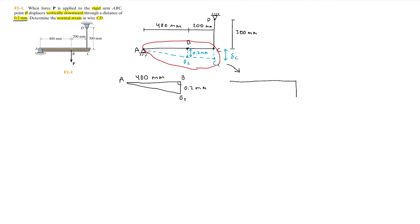Now we can do the same thing but for the bigger right triangle formed by points A and C. This length between A and C is 400 plus 200 so it'll be 600 millimeters. Then this vertical length is delta C which is what we're trying to find.